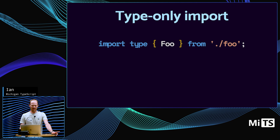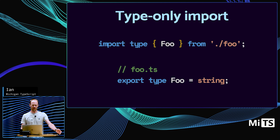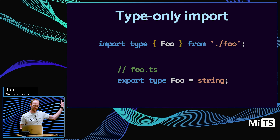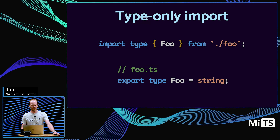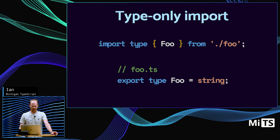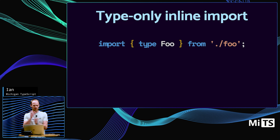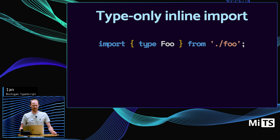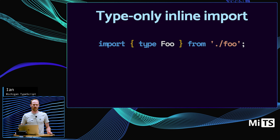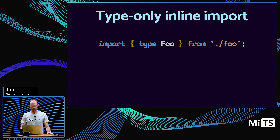There are also type-only imports. You can export a type instead of a value from your TypeScript module and use the import type syntax. This was introduced in TypeScript 3.8. There's also a similar form where you move the type keyword into the curly braces on the specifier directly, which was added in TypeScript 4.5. We'll see some reasons you might want to use that.